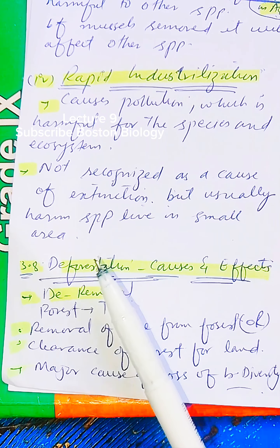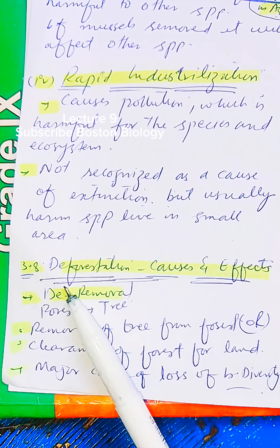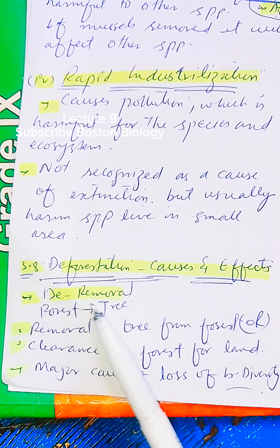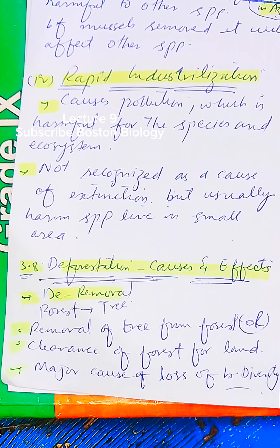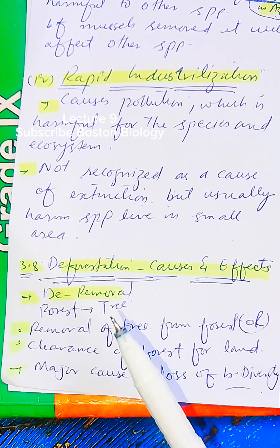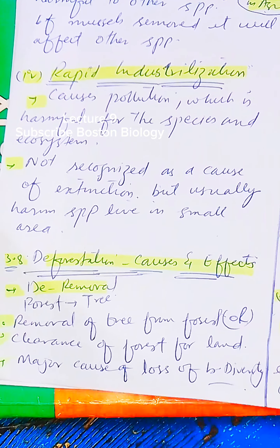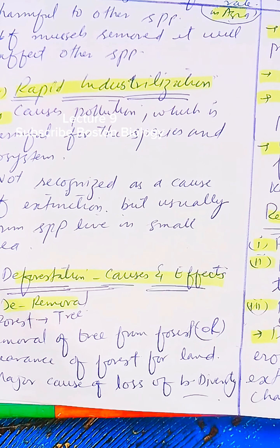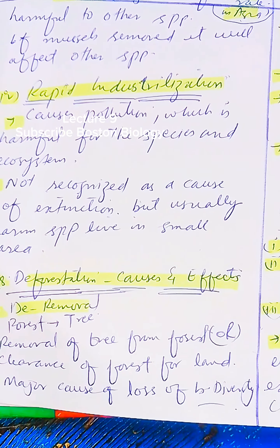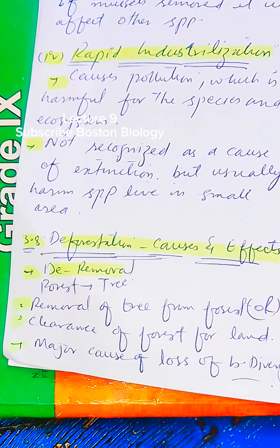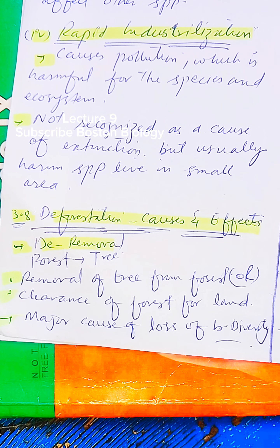Deforestation: 'De' means removal, and 'forest' means tree. The removal of trees is called deforestation — the removal of trees from the forest. The definition of deforestation is the clearance of forest for land.